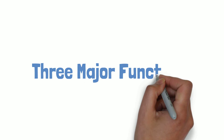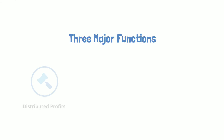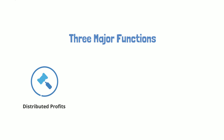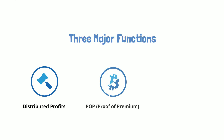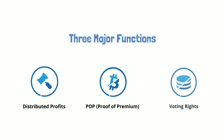There are three major functions for Fin. First, distributed profits. Second, POP or proof of premium. And third, voting rights. Now let's take a closer look at each function.